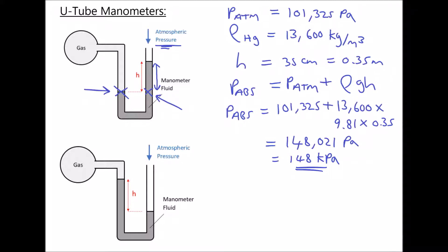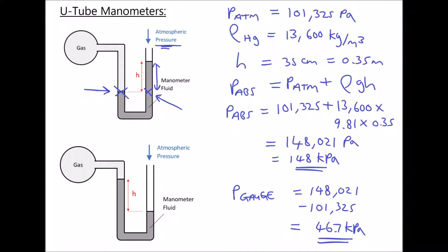But if we want to calculate the gauge pressure, then we're going to need to subtract atmospheric pressure from our absolute pressure. So we would have 148.021 minus 101.325, giving us a value equal to 46.7 kilopascals. Now what you may have realised is that we could have simplified that calculation by just doing rho GH, because all we've done is added on atmospheric pressure and then subtracted atmospheric pressure. We'll come on to the reason why that's not always the best approach when we look at our second scenario.